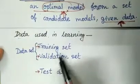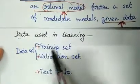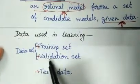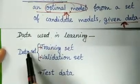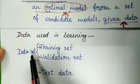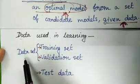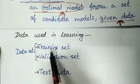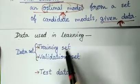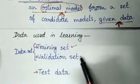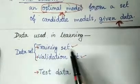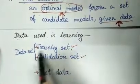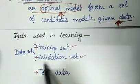Three kinds of data are used in learning. The first one is the training set, the second is the validation set, and the third is the test data. Our whole dataset — that is, observed data — is divided into two subsets. The first subset is the training set, and the second subset is the validation set. One portion is used for training, and the remaining portion is reserved as the validation set.